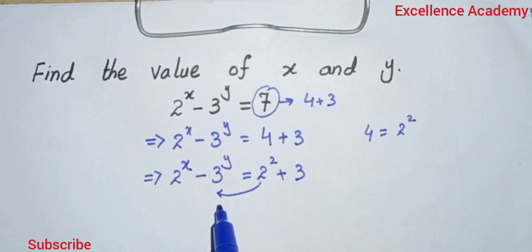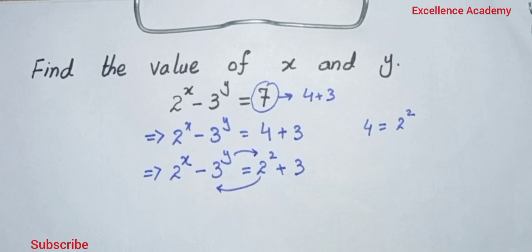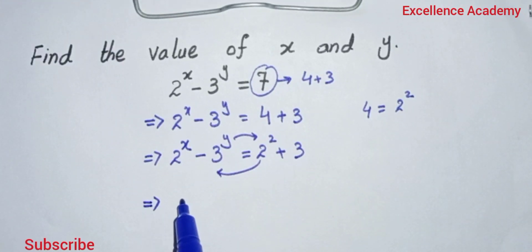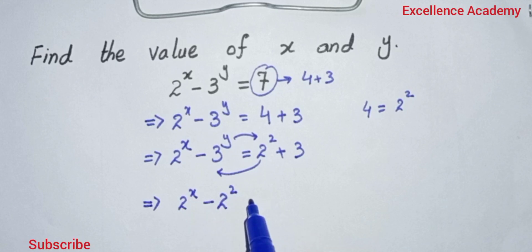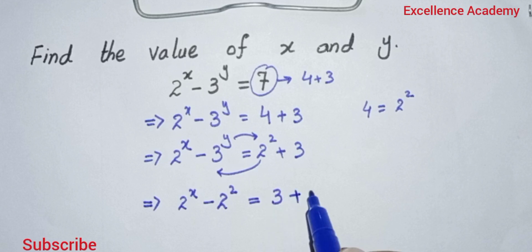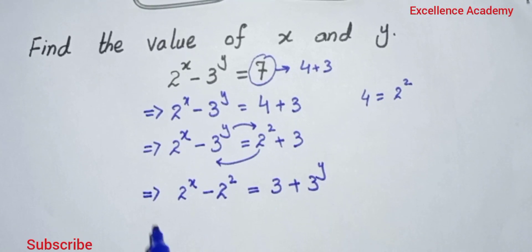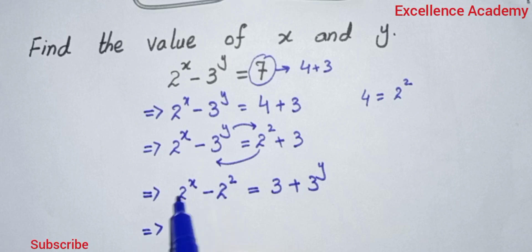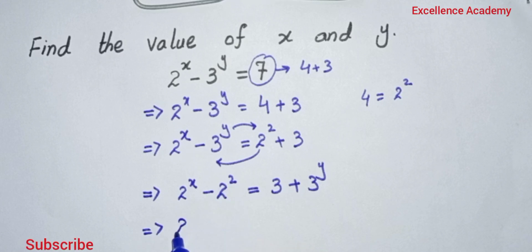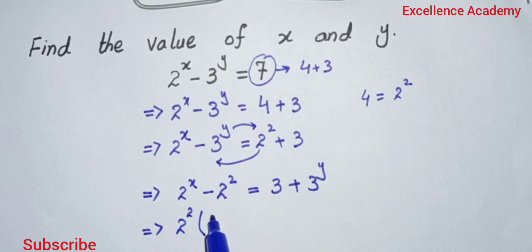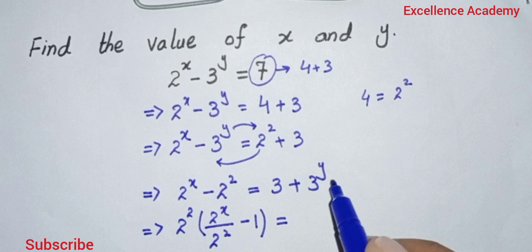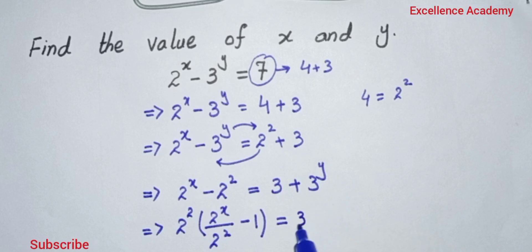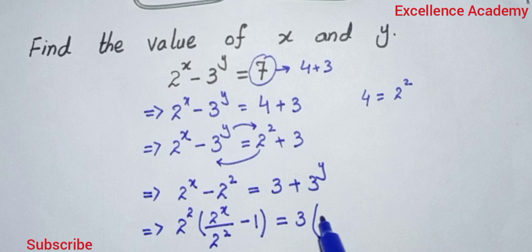Now shift 3^y to the right hand side of the equation. Then 2^x minus 2^2 equals 3 plus 3^y. Now we will take 2^2 as common from the left side of the equation. When we take 2^2 common, we have 2^x divided by 2^2 minus 1.